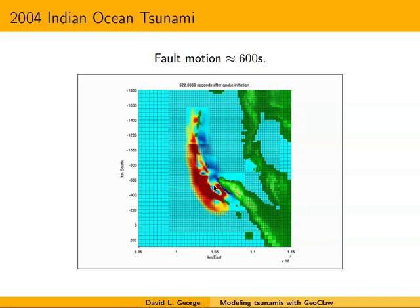As Professor Liu pointed out, and we also did similar studies, we looked at simulations: one where we instantaneously lifted up the sea surface, and two, using this temporal-spatial fault motion. In the near field, you can see differences in the timing of the waves, but in the far field—if you look over in the middle of the Bay of Bengal—it's really almost indistinguishable.